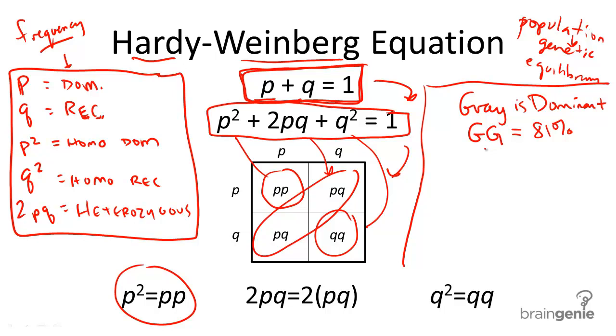So, we wrote down what we know. Gray fur color is dominant, and the frequency is 81%. What do we see over here as representing the dominant gene? That's little p, right here. So, little p, or p squared in this case, is equal to 0.81.